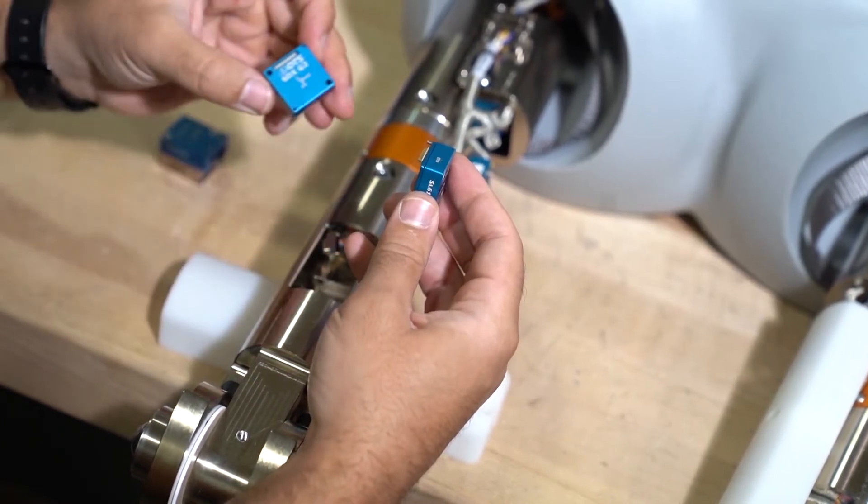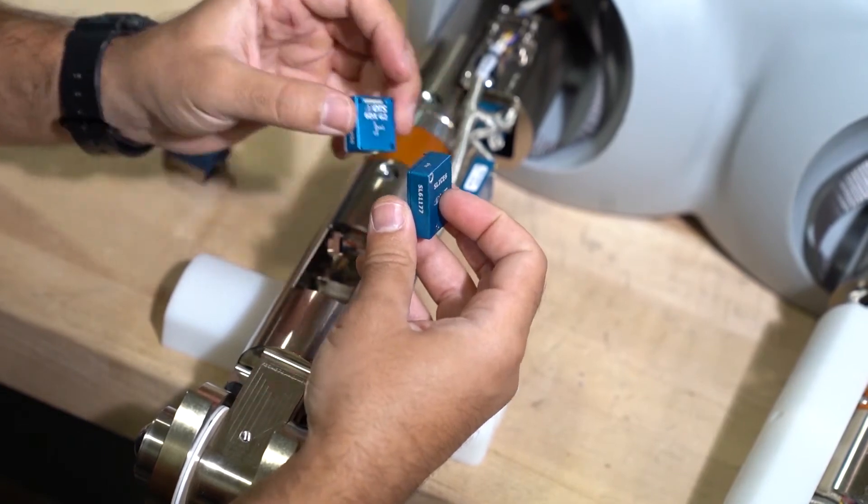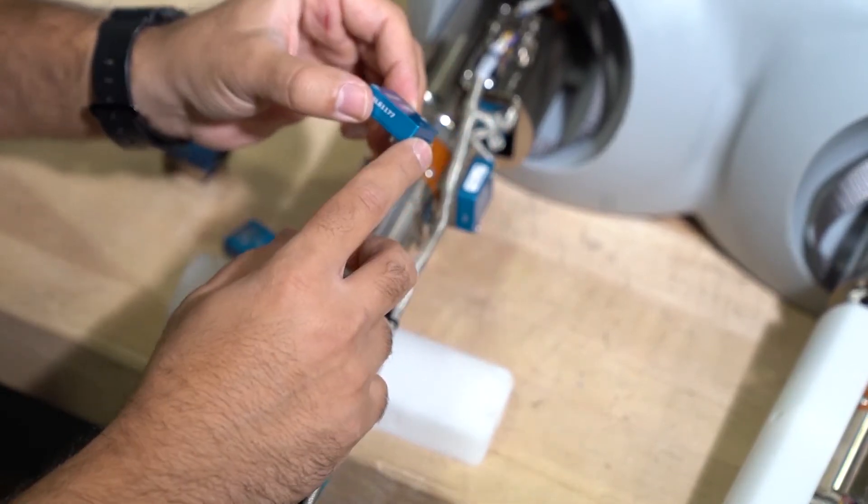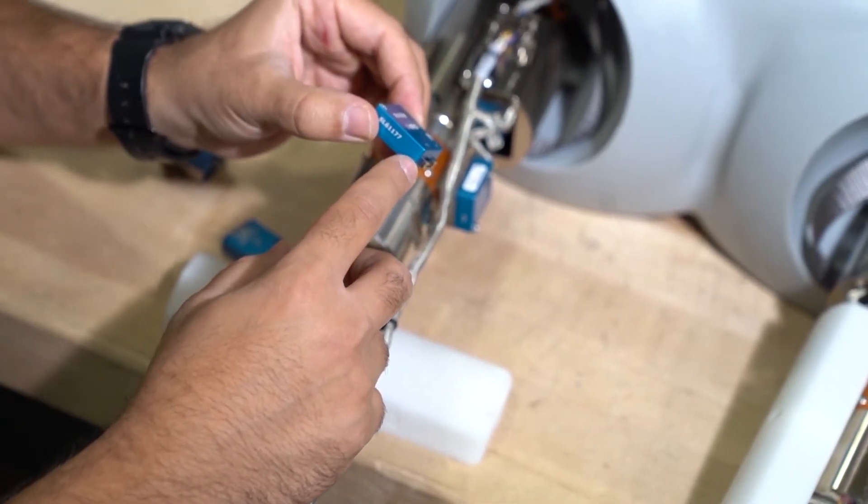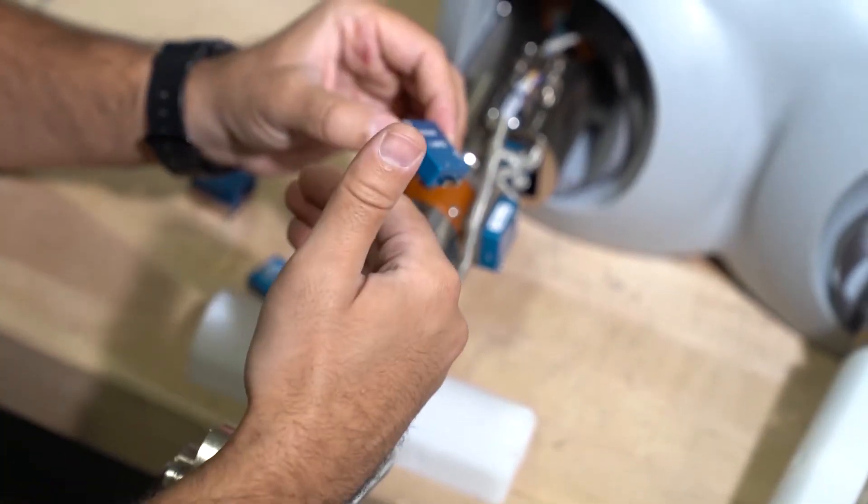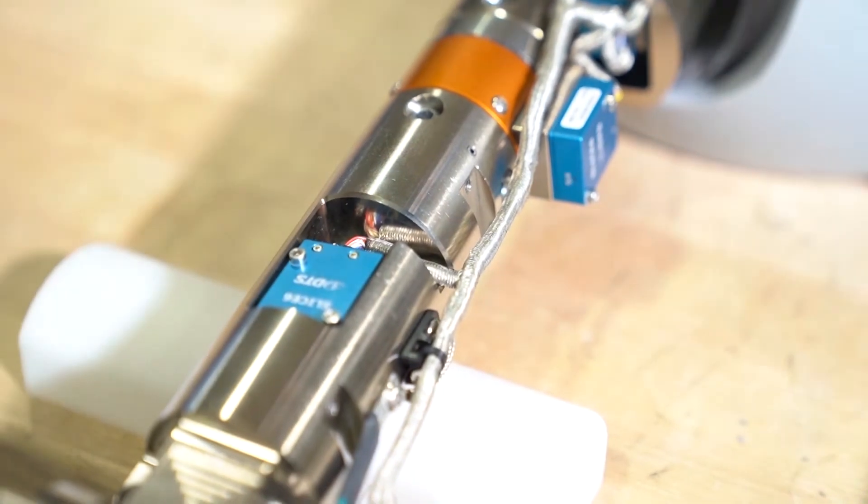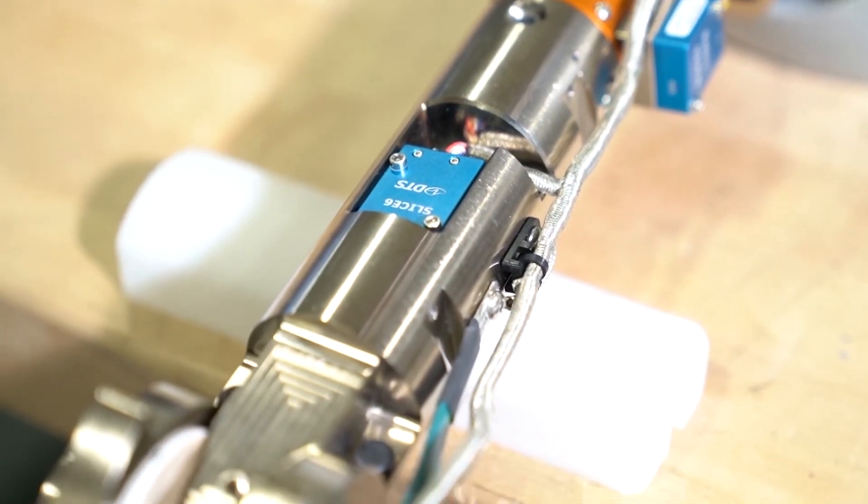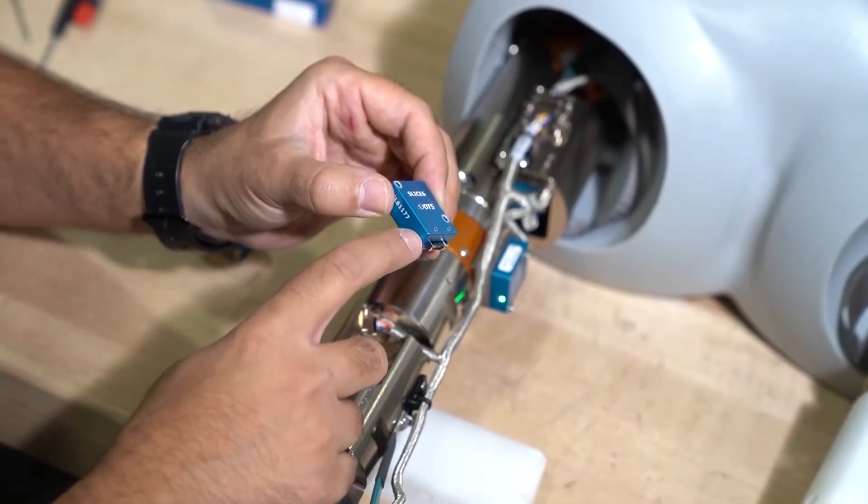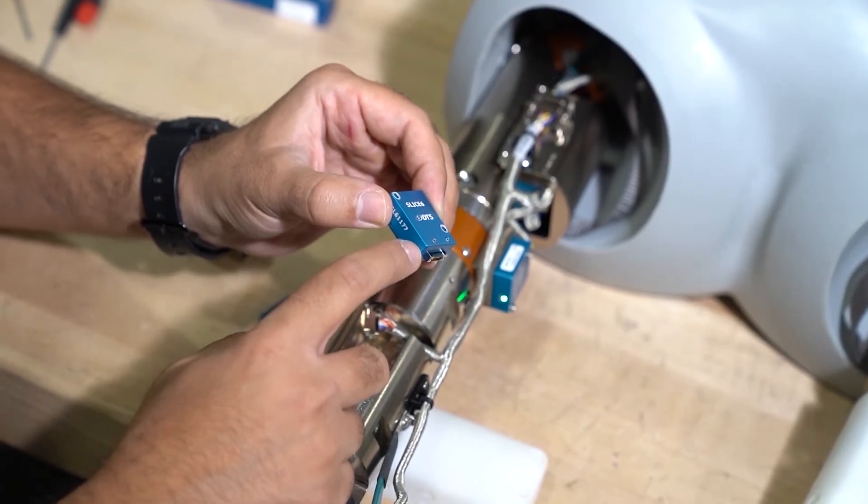And after the analog signals pass and get recorded into the Slice 6, the Slice 6 has 16 gigabytes of flash memory and that stores directly to this Slice 6 unit. So if anywhere along the chain you have a cable cut or power loss, all your data is safe inside the Slice 6 that's easily recoverable after the test.